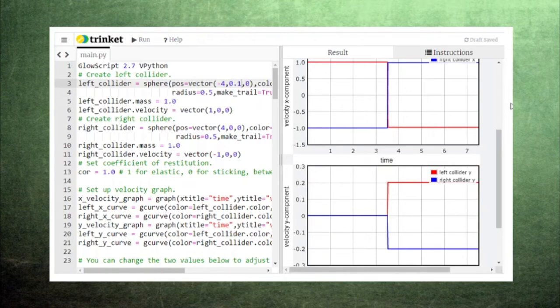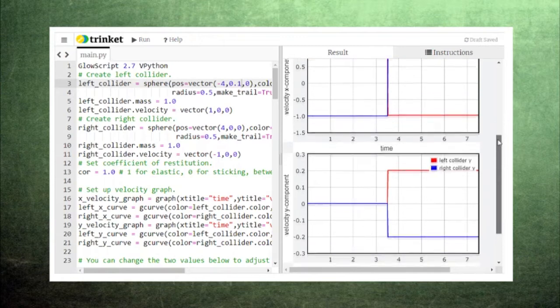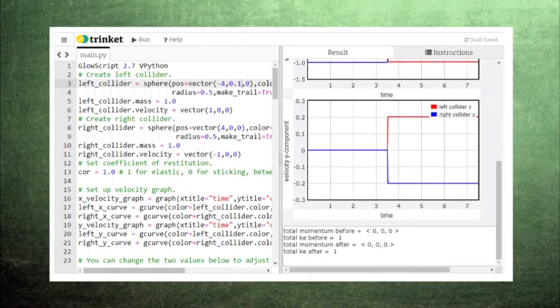The graphs show that they've exchanged velocities in the x direction and picked up opposite velocities in the y direction. This code will also show us the total momentum and total kinetic energy during phase one and phase three of the collision. Just as expected, these totals are the same.